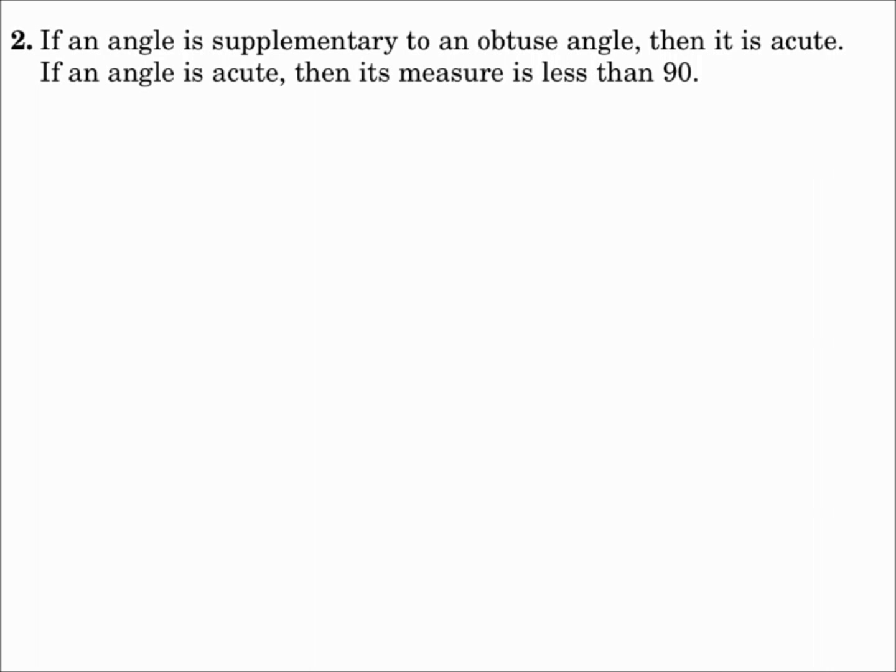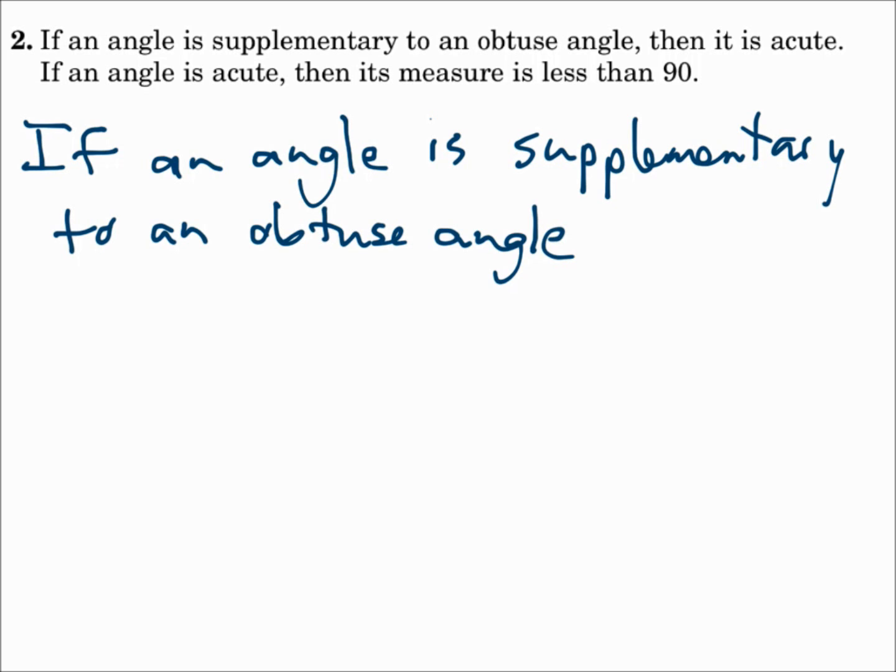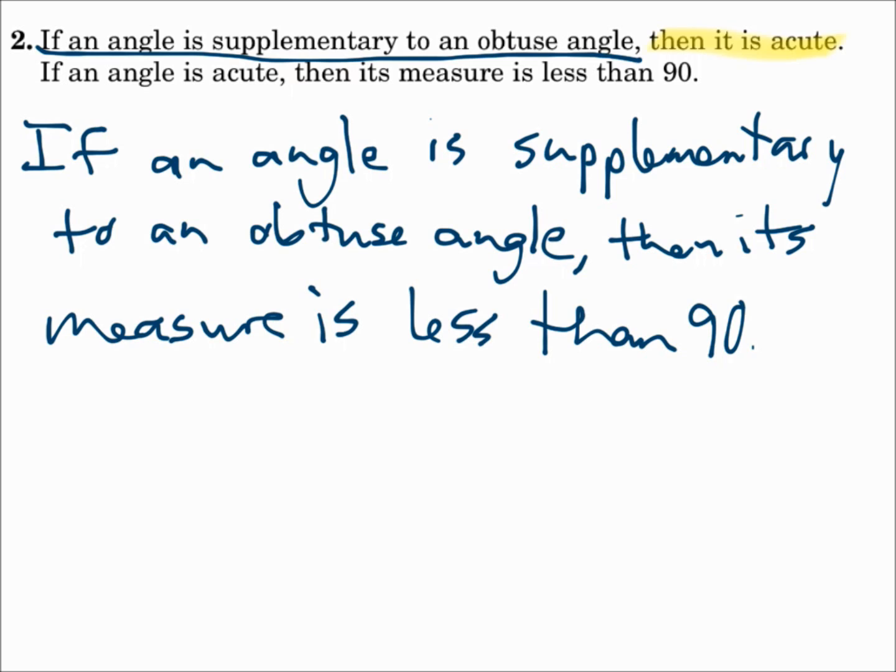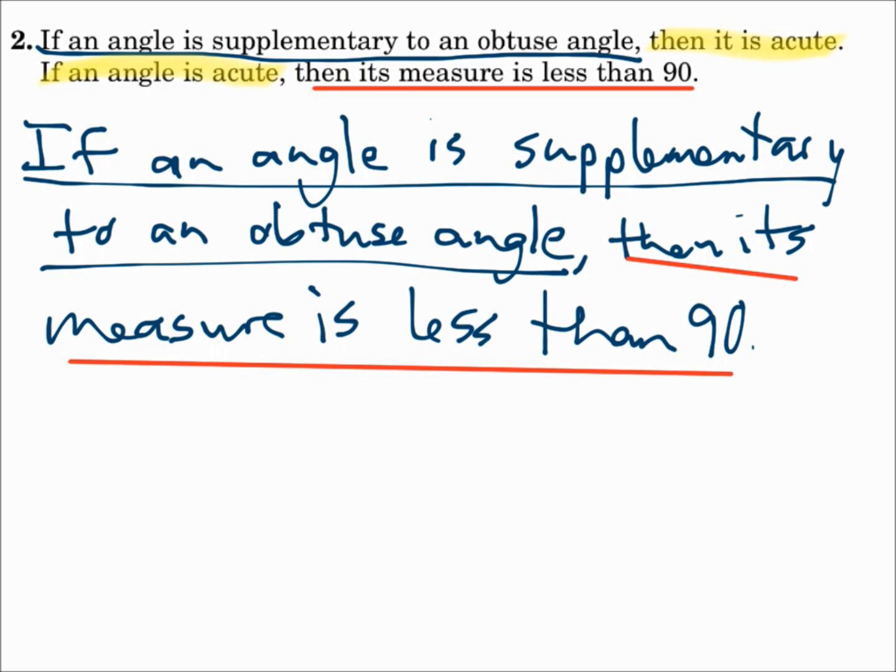Number two. If an angle is supplementary to an obtuse angle, then it is acute. If an angle is acute, then its measure is less than 90. This is definitely P to Q and Q to R, so say P to R. If an angle is supplementary to an obtuse angle, then its measure is less than 90. If P goes to Q and Q goes to R, then P goes to R. Syllogism works.